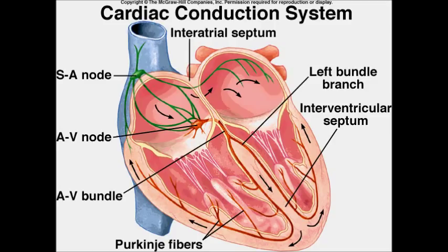From the apex, the wave of excitation travels up the walls of the ventricles, so contraction occurs from the bottom upwards, pushing blood upwards into the arteries. This is very important — if contraction started from the top, blood would be pushed downward, which could be dangerous. The diagram shows the SAN at the top of the right atrium, the AVN at the bottom, and the atrioventricular bundle (start of the Purkinje tissue) going down the septum and then back up the ventricular walls.